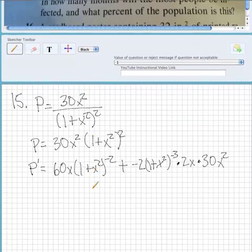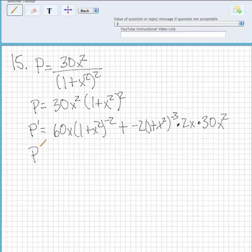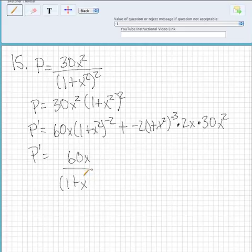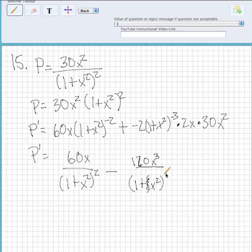So here's our derivative right here and then we'll rewrite it as 60x over one plus x squared minus 120x squared over one plus x squared to the third. So we brought that back down and multiplied everything out.